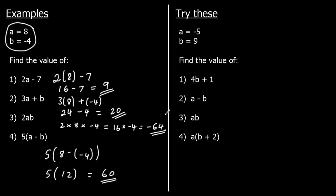And some for you to try. This time we're changing a into negative 5 and b into 9 — substituting negative 5 in for a and substituting 9 in for b. Give them a go.